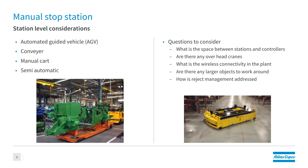Are there larger objects to work around? If you want to put torque reaction or an arm in place, do you have the ability to move it out of the way so that part can continue down the line? And again, regardless of whether it's a manual stop station or automatic line, we want to talk about reject management and how the part is being presented while being assembled.